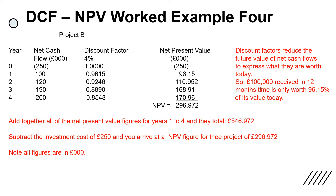So you invest £250,000. In one year's time you generate a net cash flow of £100,000, but you have to discount it — that £100,000 in 12 months' time is only worth 96.15% of its value, so today it's only worth £96,150. In two years' time you forecast £120,000, but that's only worth 92.46% of its value today. The calculation is: multiply the cash flow by the discount factor to arrive at the net present value. Net present value is what those future cash flows are worth today — you are discounting, you are reducing the future cash flows. So £200,000 in four years' time is only worth 85.48% of its value today.